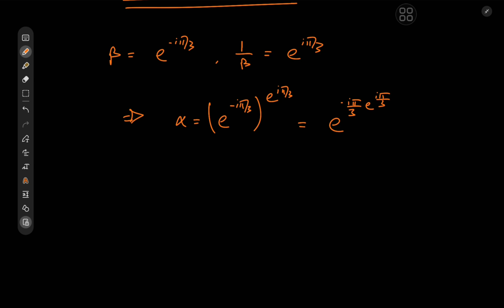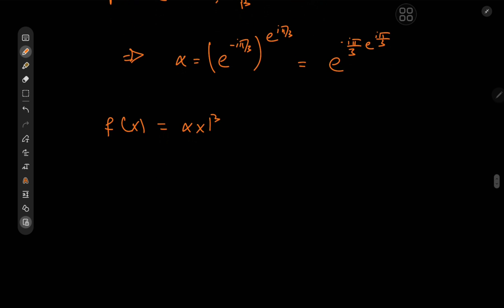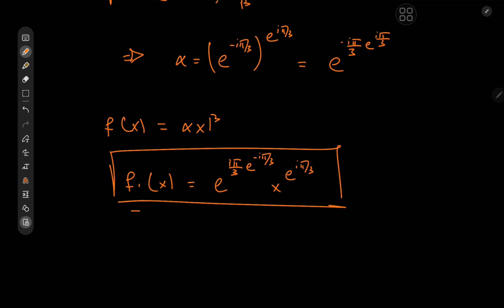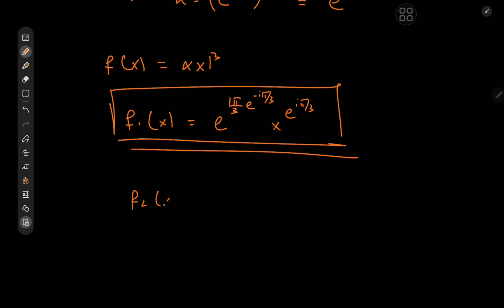Now it's time to piece everything together, since f of x equals alpha times x to the beta. So f sub one of x is e to the i pi over three raised to e to the negative i pi over three, times x to the e to the i pi over three. And f sub two of x is e to the negative i pi over three raised to e to the i pi over three, times x to the e to the negative i pi over three. So these are two possible solutions to our differential equation.